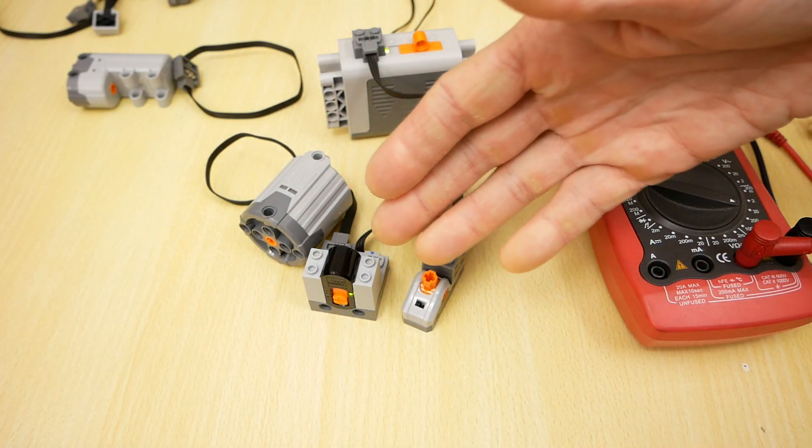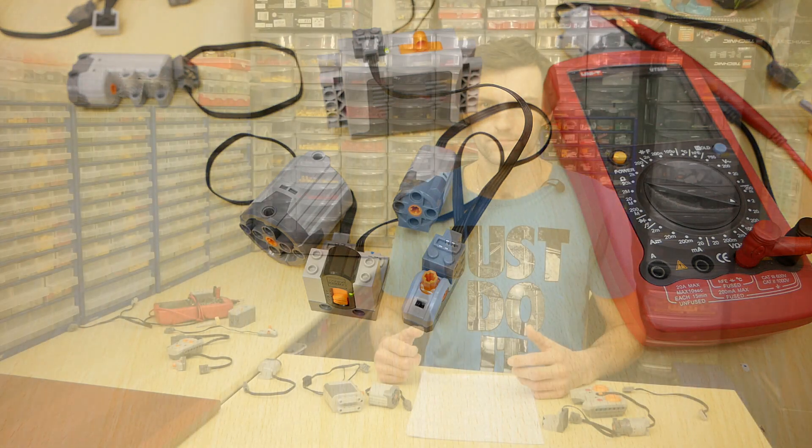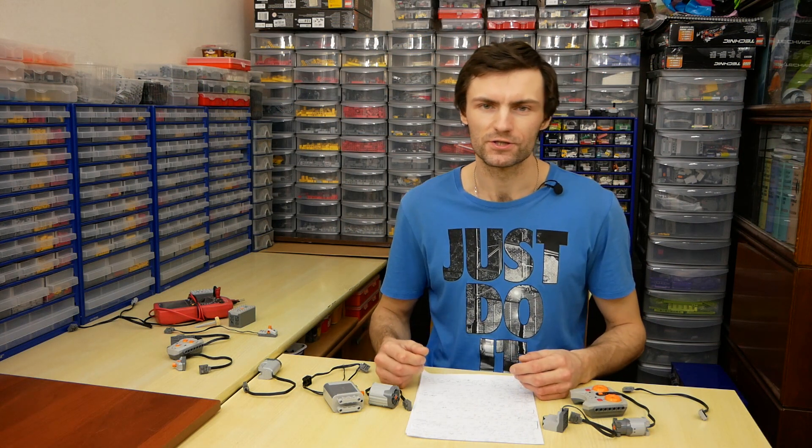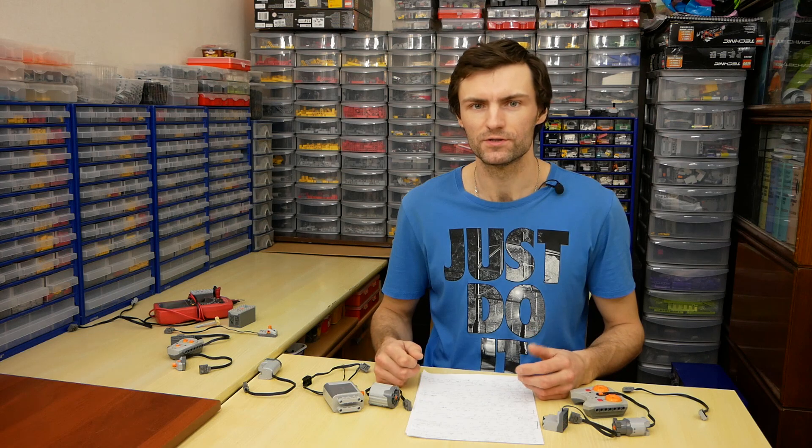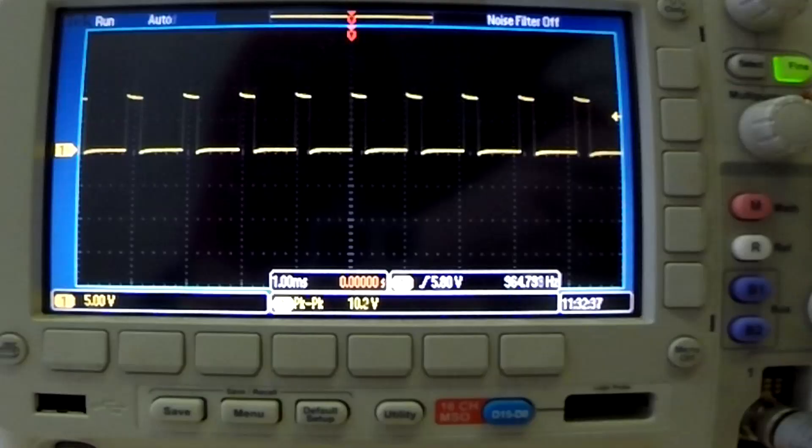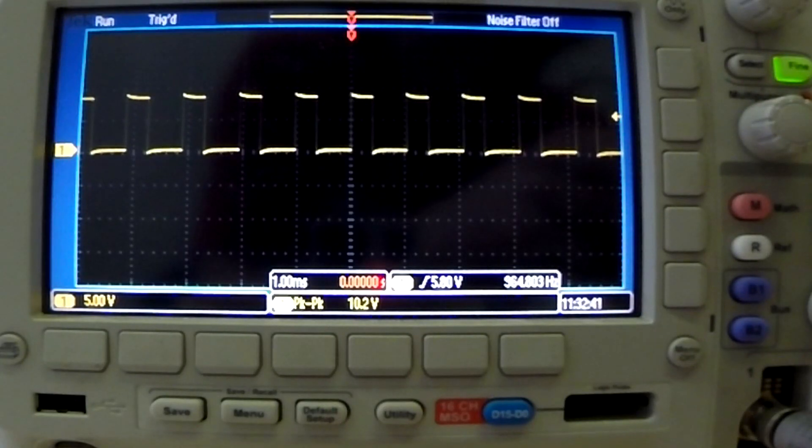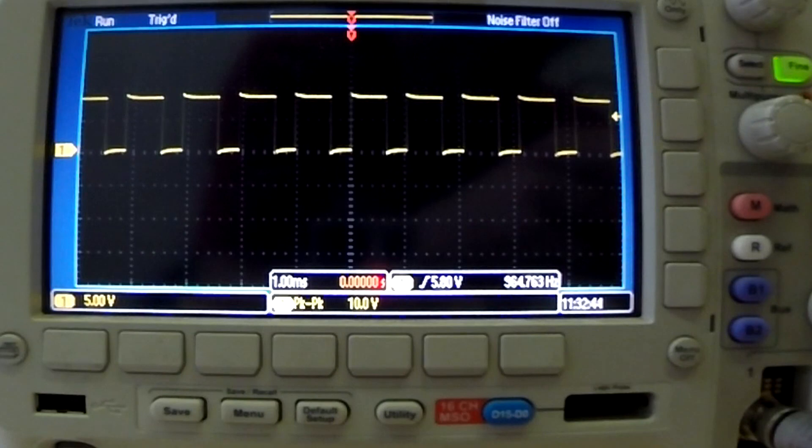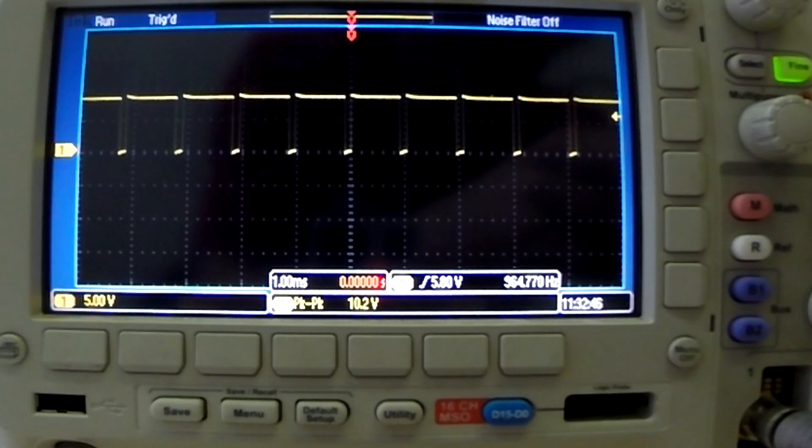So the motors and receivers have independent control. To control the motor rotation speed, power function system uses the pulse width modulation. On your screen, you can see the motor voltage. The wider are pulses, the faster rotates the motor. And the fastest speed corresponds to the constant voltage on motor.